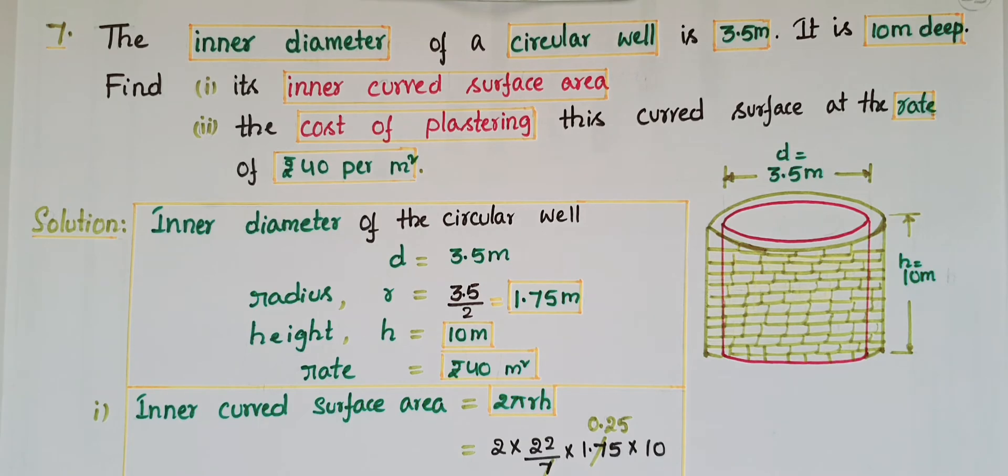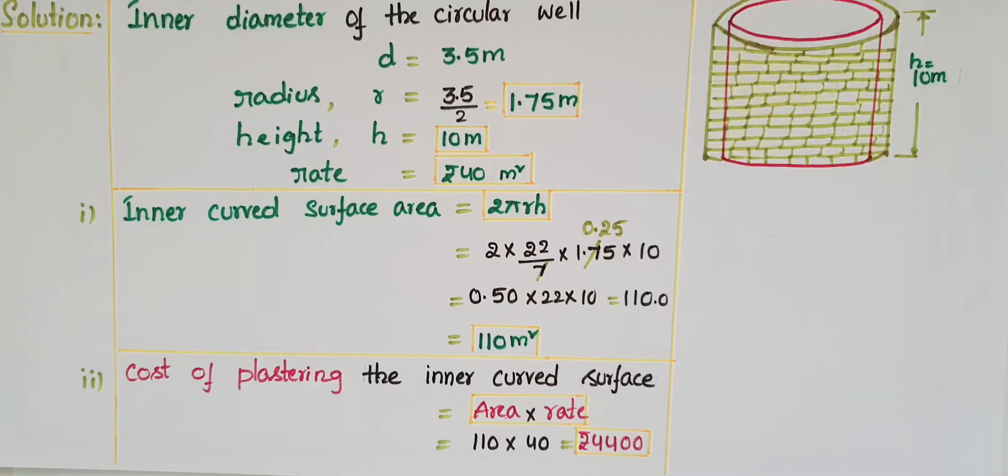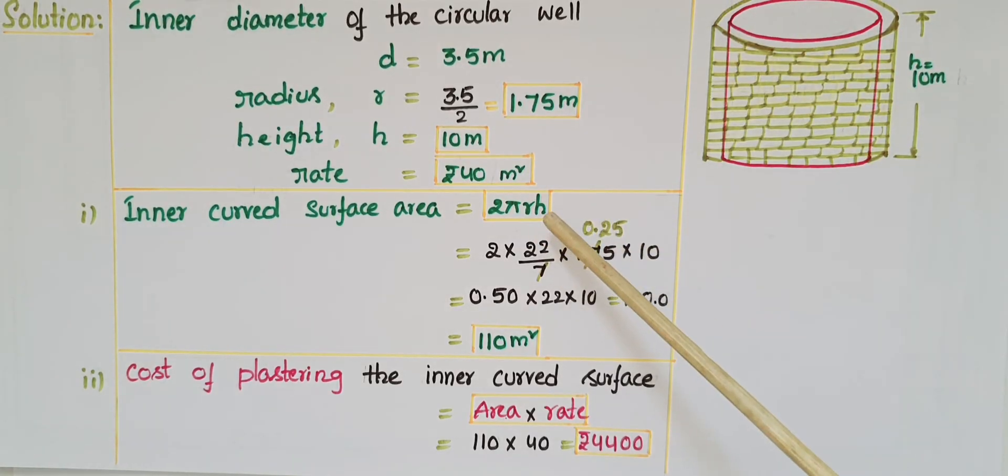We know that the formula for inner curved surface area of a circular well is 2πrh. That equals 2 × 22/7 × 1.75 × 10.